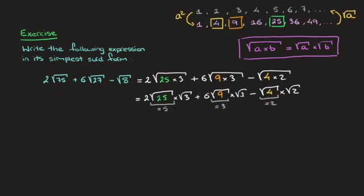Using those results, we can state that this equals 2 times 5 times the square root of 3, plus 6 times 3 times the square root of 3, and we take away from that 2 times the square root of 2.